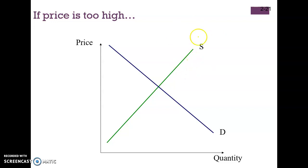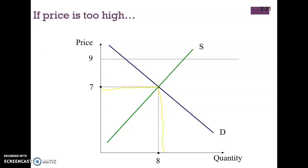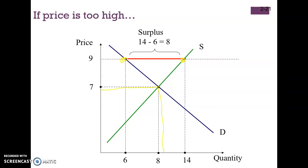If the price is too high — greater than the equilibrium price — consumers will demand less and producers will supply more. Supply becomes greater than demand, and the difference between these two represents a surplus of production. When there is this surplus, suppliers tend to reduce supply, which decreases the price, and the process continues until we reach the equilibrium price again.